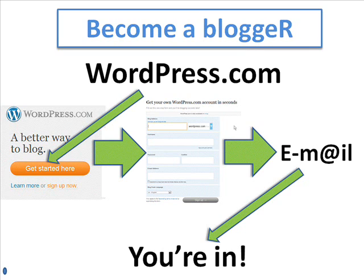WordPress.com is based on a free open source platform, just like R, and is very easy to get started with. All you need to do is go to the website, click the big orange button, fill out your email and website name, and then wait for an email. In the email that you will get, there will be an activation link — just follow it, and then you have a blog. That's it.